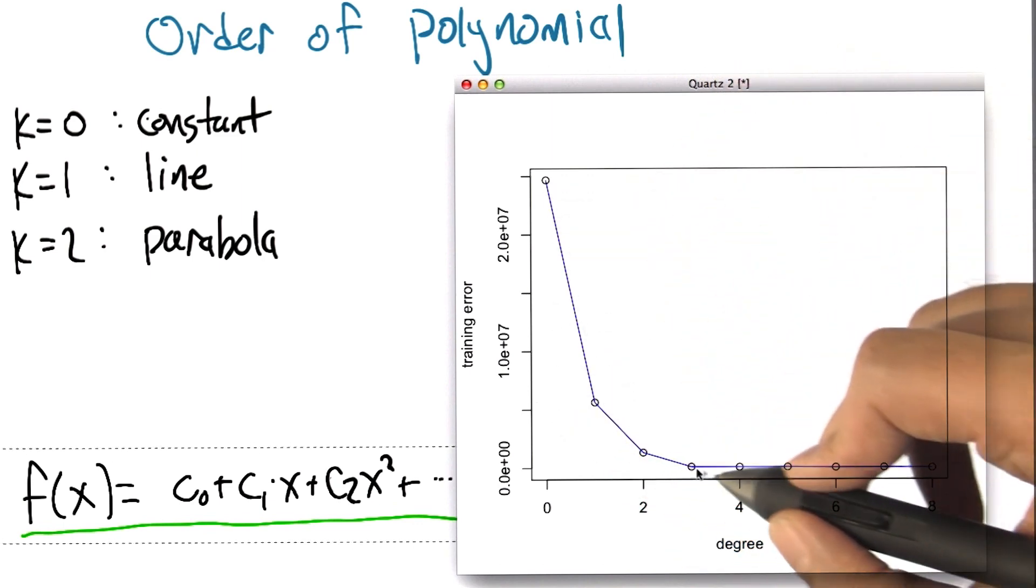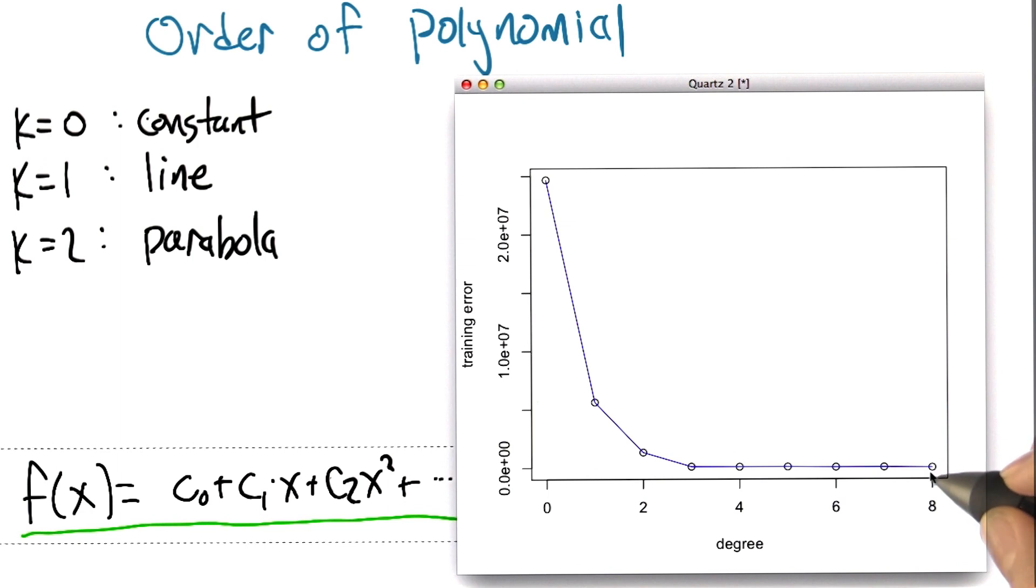this function that we're trying to minimize, as we go from order 0 to order 1, order 2, order 3, order 4, to 5, all the way to 8, by 8 there is no error left because it nailed every single point.